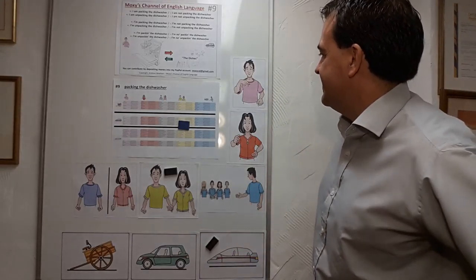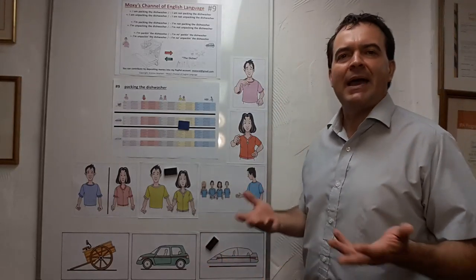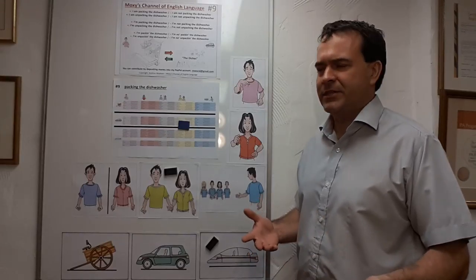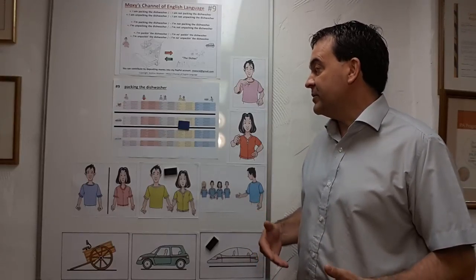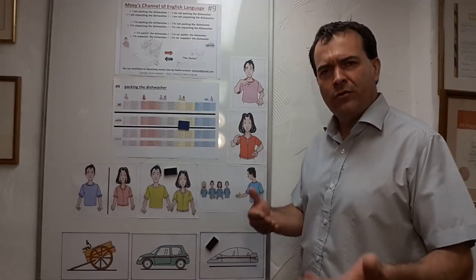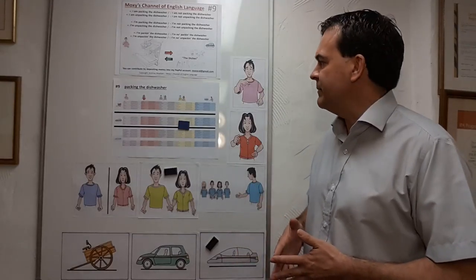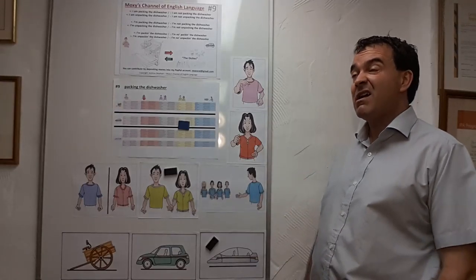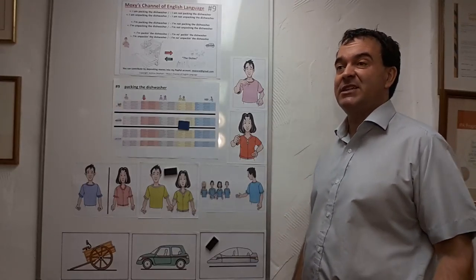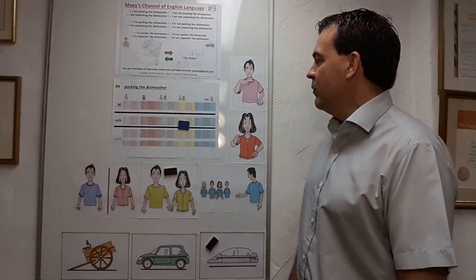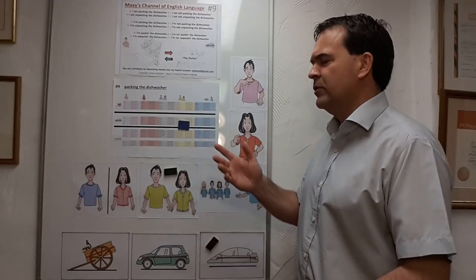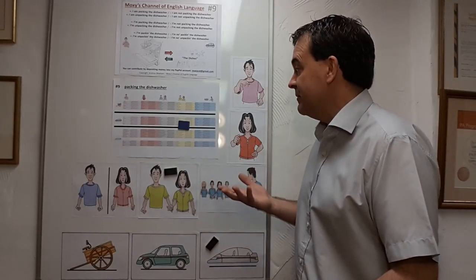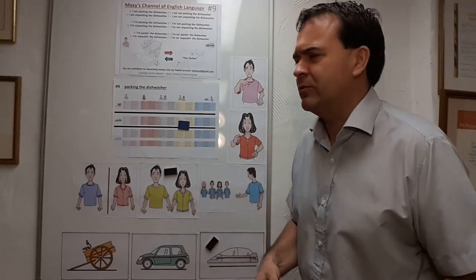Future tense. We are going to be packing the dishwasher. We are not going to be packing the dishwasher. We're going to be packing the dishwasher. We're not going to be packing the dishwasher. We will pack the dishwasher. We will not unpack the dishwasher. We'll pack the dishwasher. We won't unpack the dishwasher.